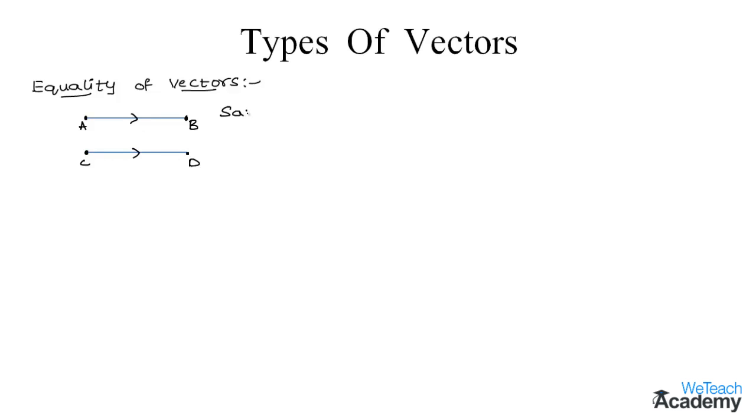So we can say that two vectors are said to be equal if they have same direction and same magnitude. The equality of vectors can be represented by vector AB is equal to vector CD.